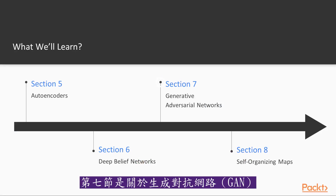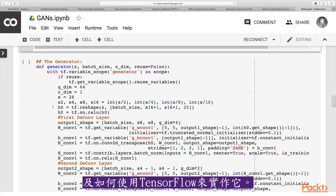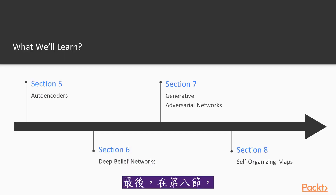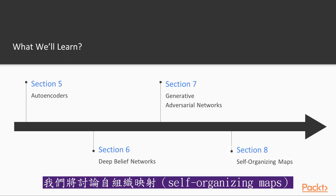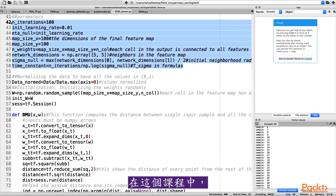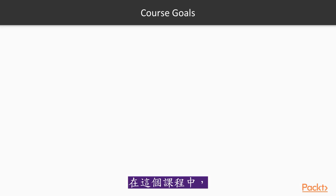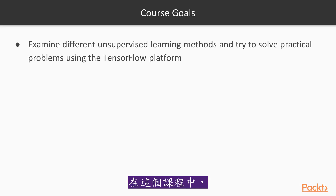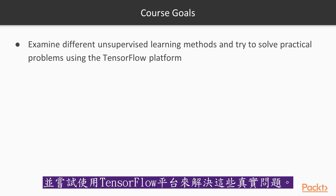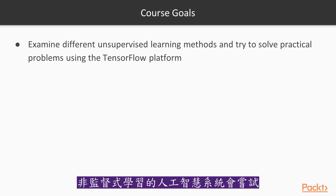Section seven is about generative adversarial networks and their implementation using TensorFlow. And at the end, in section eight, we will discuss self-organizing maps and their implementation using TensorFlow. In this tutorial, we will examine different unsupervised learning methods and try to solve practical problems using the TensorFlow platform.